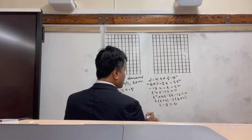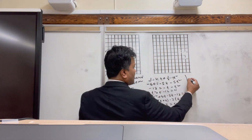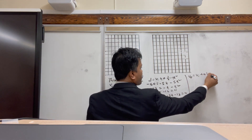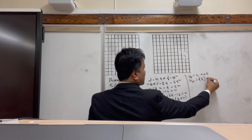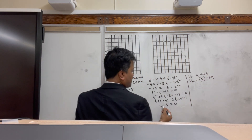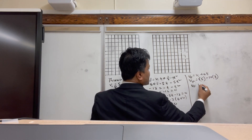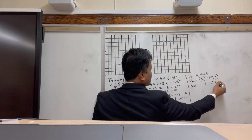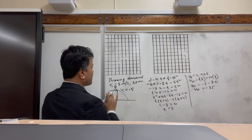Now that you know the time is 3 seconds, find the final velocity using vf = vi + at. So vf = -5 - 10 × 3 = -5 - 30 = negative 35 meters per second.